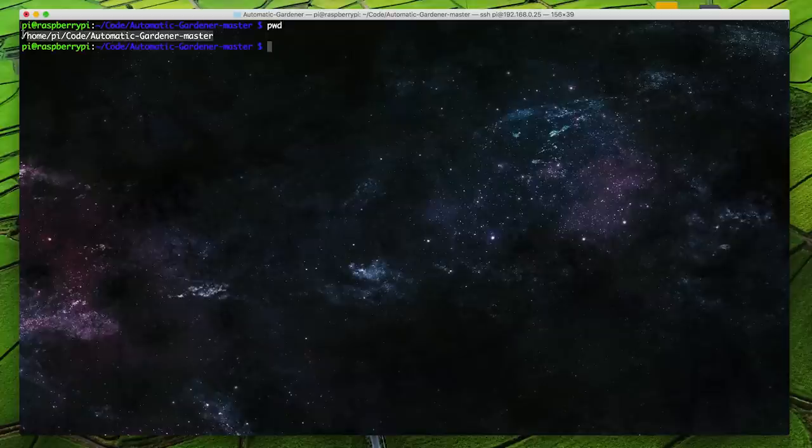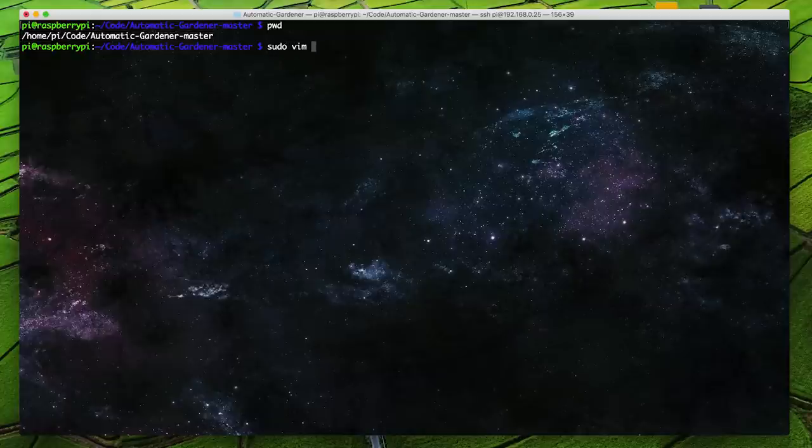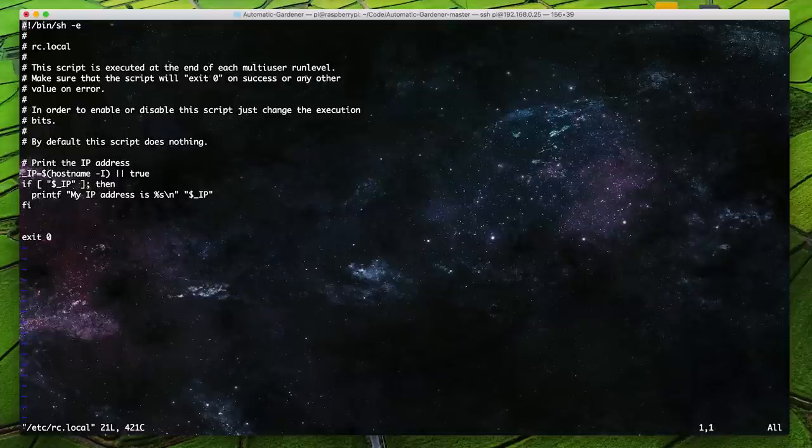Next, I want to make sure that my gardener starts up whenever I plug in my Raspberry Pi. To do this, I'll type pwd to get the current working directory. Then I'll type sudo vim /etc/rc.local to edit the rc.local file and run my program when the Pi starts up.